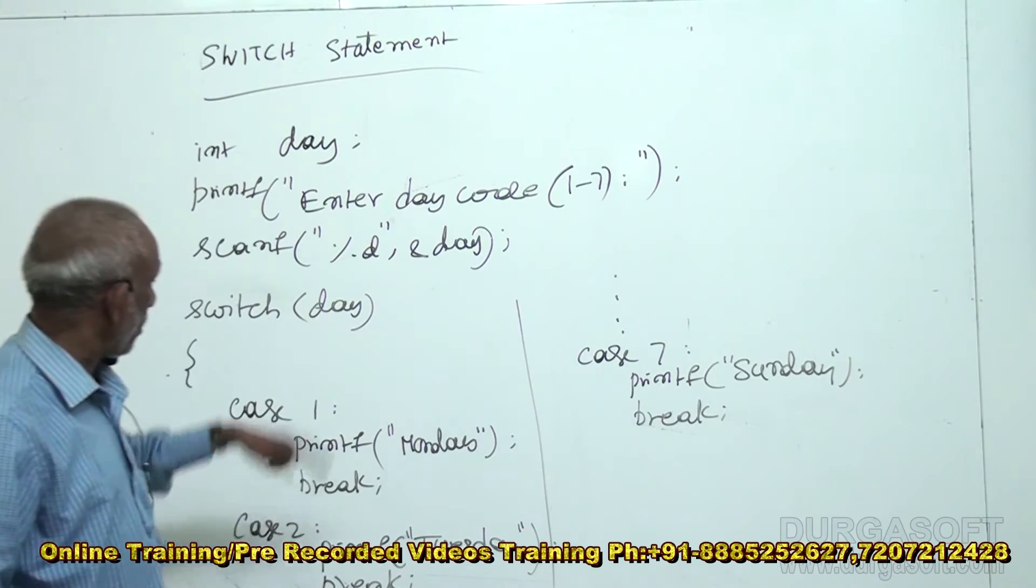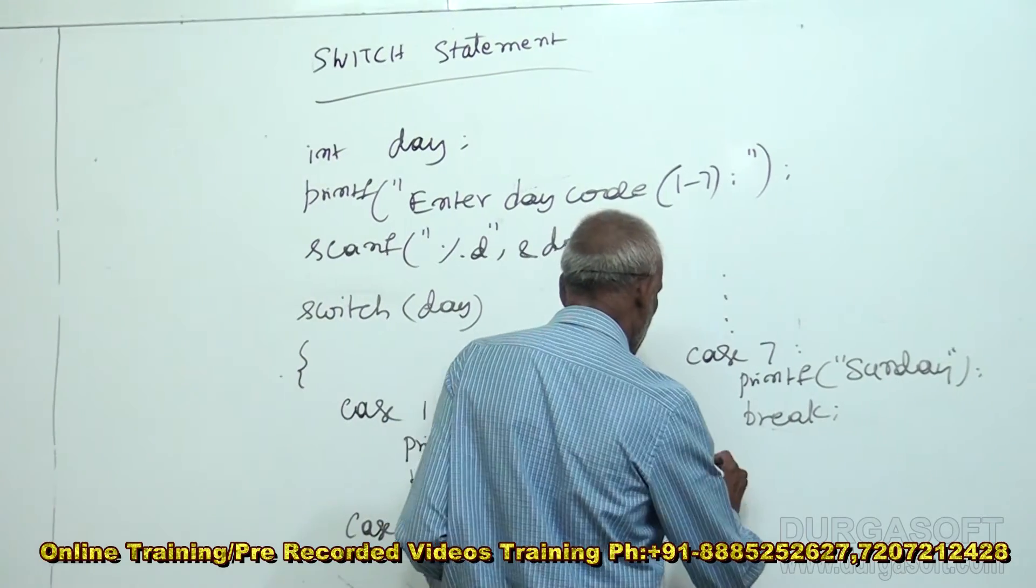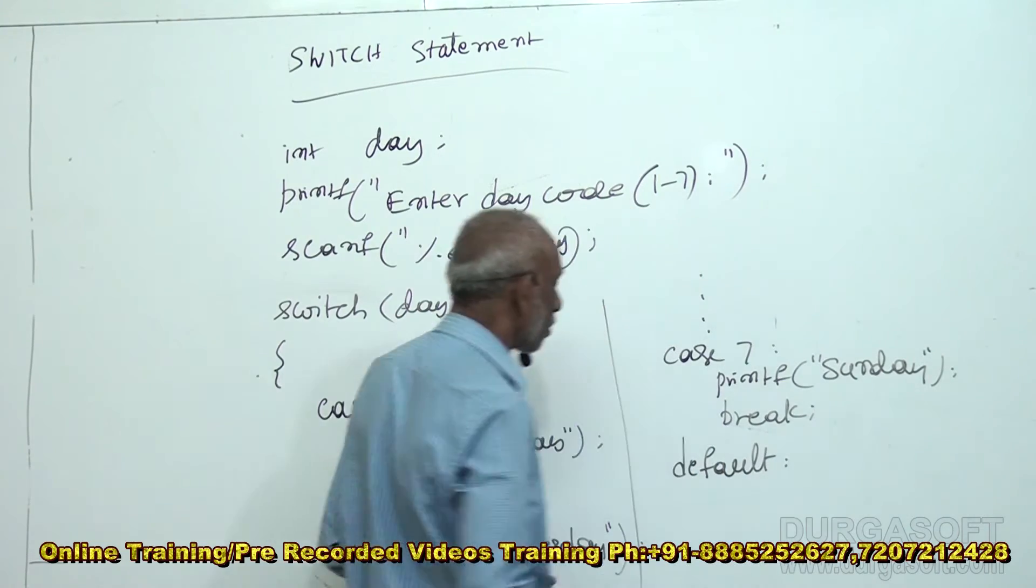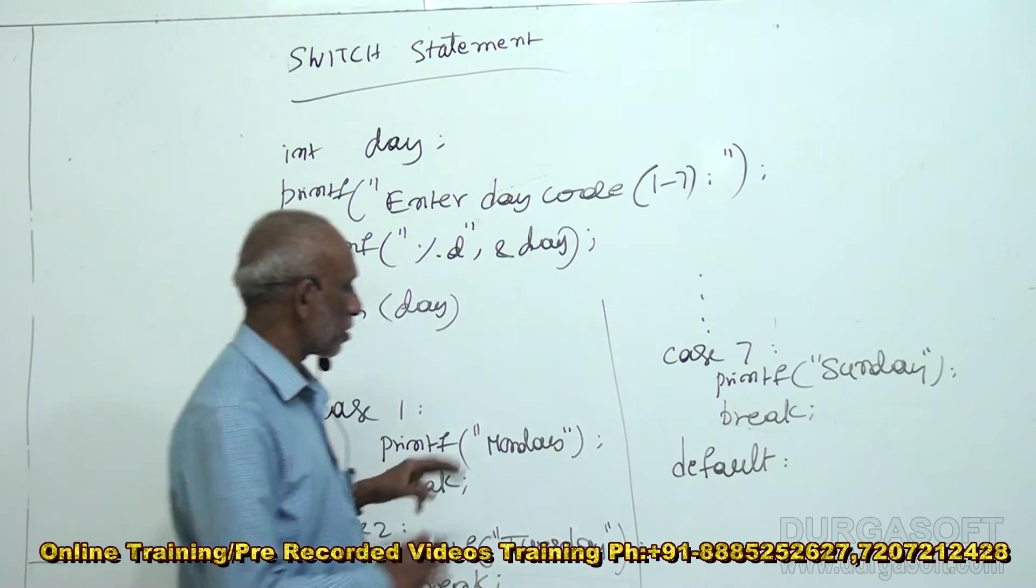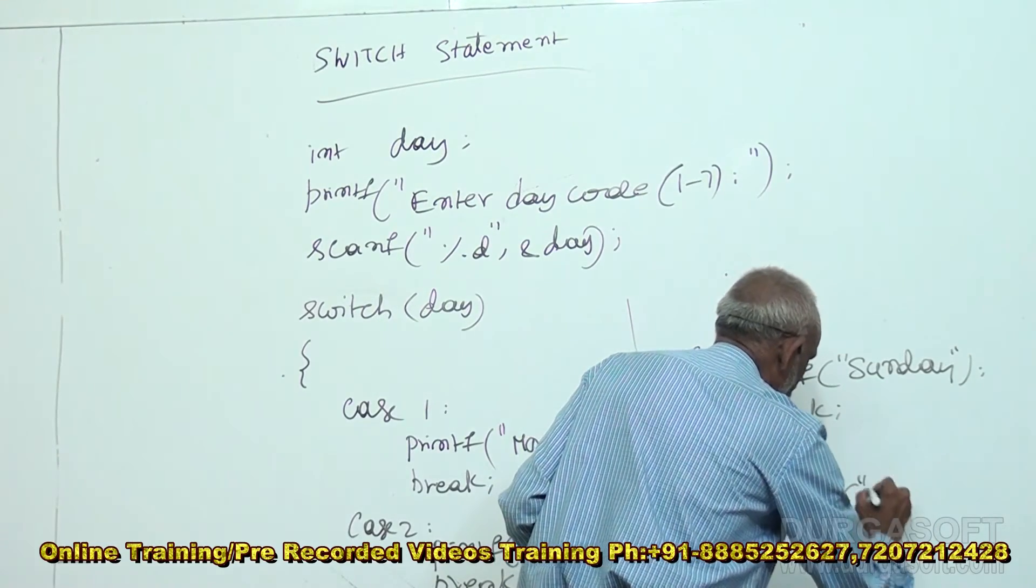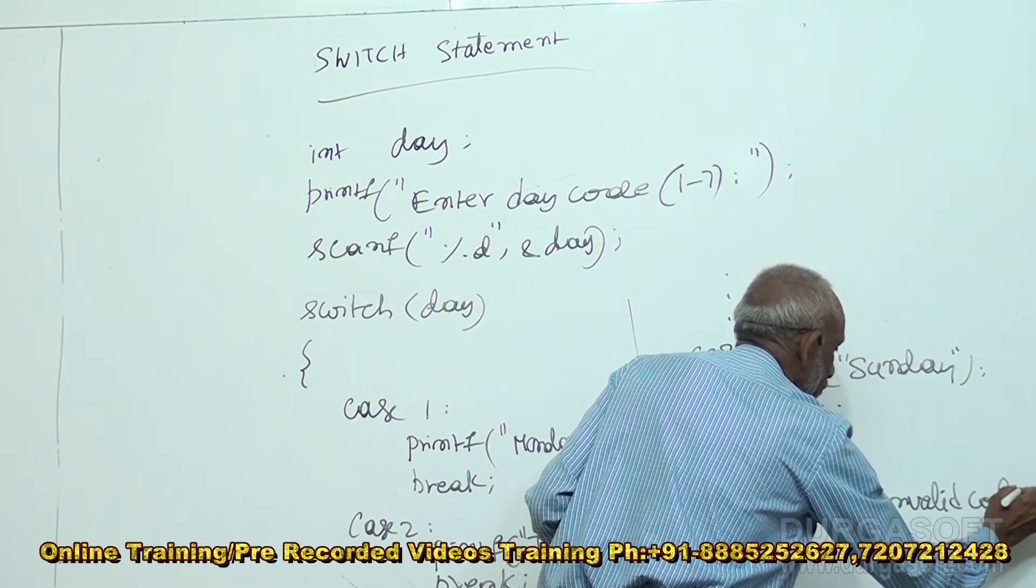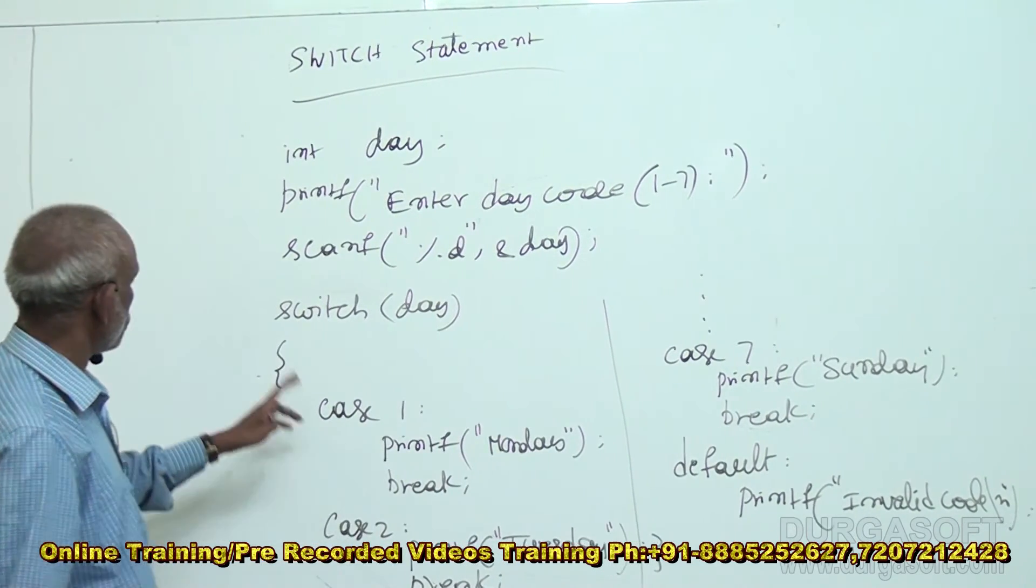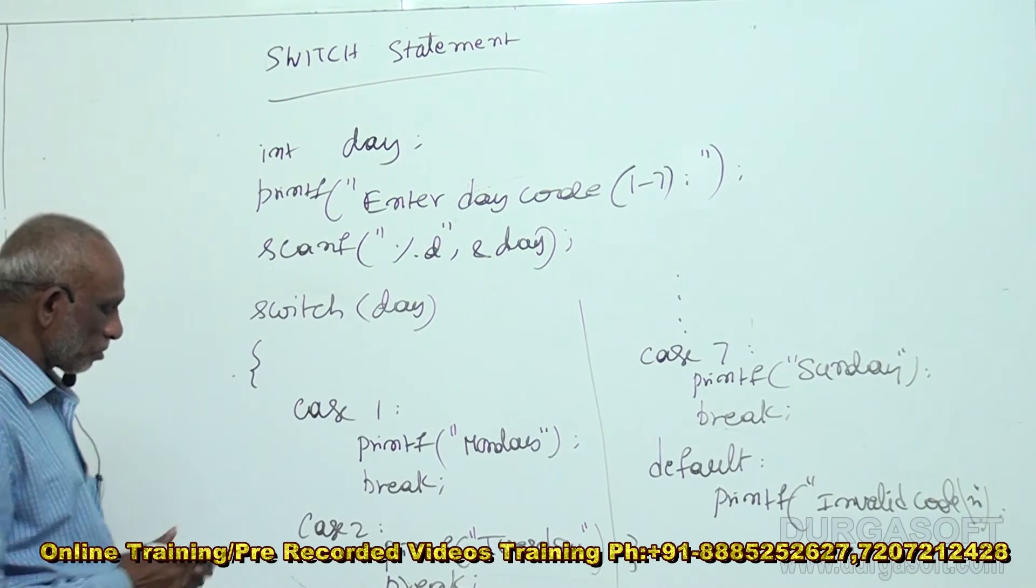Suppose, the code does not match any of this. User entered some 10 or 50. So, that is invalid code. That is checked by default. Default means the code does not belong to any of these options. 1 to 7. It is not 1 to 7. Default means none of this. So, display error. Invalid code. Close the switch statement. So, switch statement starts with a brace and ends with a brace. So, this is how a switch statement is used.